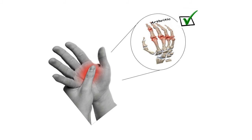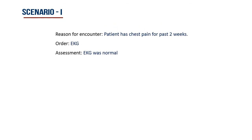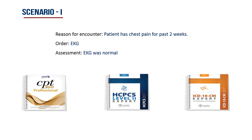Let's see some examples for better understanding. Scenario 1: Reason for encounter — patient has chest pain for the past two weeks. The physician orders an EKG. The final assessment of the EKG was normal. How to code this scenario: 93000 for the EKG procedure, which we code from the CPT manual. There is no supply for EKG, so no HCPCS code needed. For diagnosis, R07.9 for chest pain, which is the medical necessity for the EKG procedure.